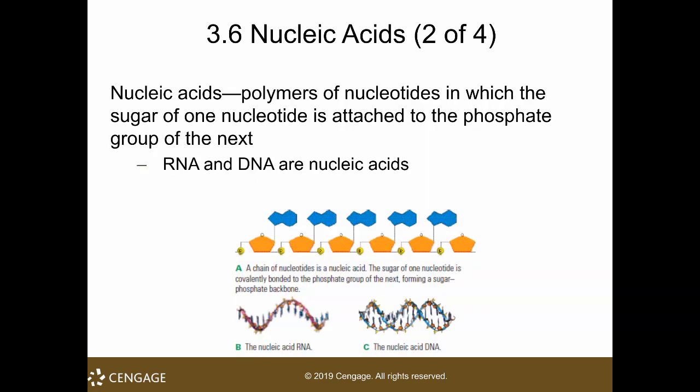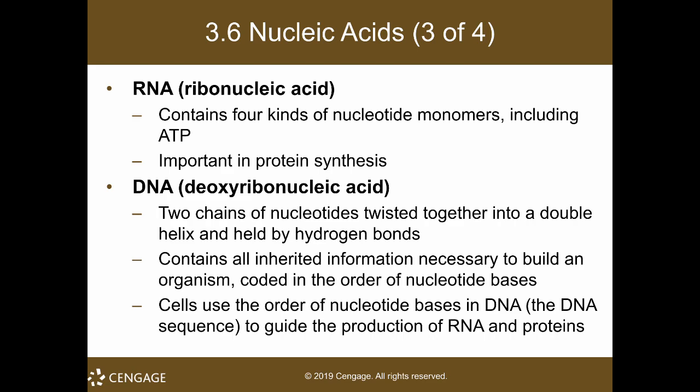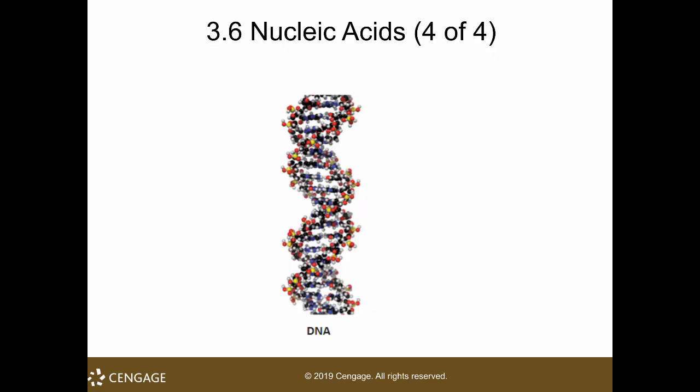When nucleotides form bonds together, you have your nucleic acids — a chain of nucleotides. Like proteins, nucleic acids are unbranched. RNA is a single-stranded nucleic acid, whereas DNA is a double-stranded nucleic acid. Their most famous function is the transfer and storage of genetic material. RNA stands for ribonucleic acid and contains four kinds of nucleotides; DNA is the deoxyribonucleic acid. We will discuss more about that when we cover transcription and translation. Here is the famous double-helical structure of the DNA.